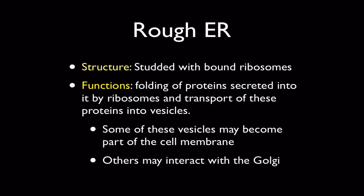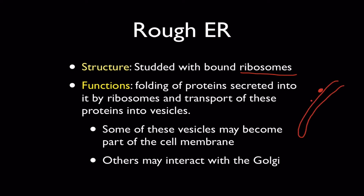The rough endoplasmic reticulum looks just like the smooth ER, except it is studded with ribosomes — the presence of ribosomes is what makes it appear rough. Its functions are primarily centered on proteins, which are being transcribed and translated by the attached ribosomes. These proteins are secreted into the ER, with ribosomes translating proteins and squirting them into the cisternal space. The ER also packages these proteins into vesicles, which may become part of the cell membrane or be sent to the Golgi apparatus for further processing.